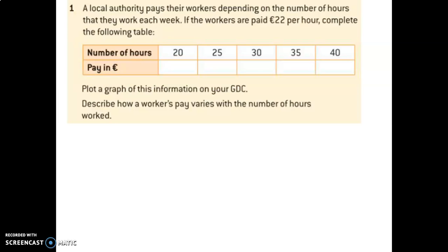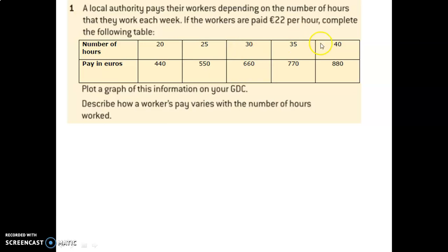The question begins like this. A local authority pays their workers depending on the number of hours that they work each week. If the workers are paid 22 euro per hour, complete the following table — what will go in these boxes? Fill in the whole table, and then tell me what goes in the box under 25 and under 40. Here's the table you should have. It was a pretty simple exercise — you just had to do 22 euro times the number of hours to get the value that they're paid. So 25 hours times 22 is 550, and 35 hours times 22 euro was 770.